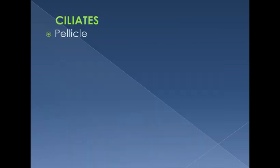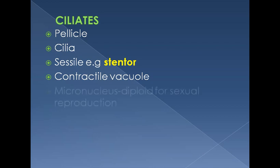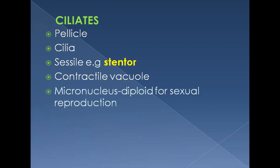Ciliates have a pellicle — the outermost covering — which is an enriched or strengthened plasma membrane with additional proteins deposited on its underside to make it more elastic and strong. Cilia are the structures for locomotion. Some ciliates are sessile, for example Stentor, and all have a contractile vacuole for osmoregulation.